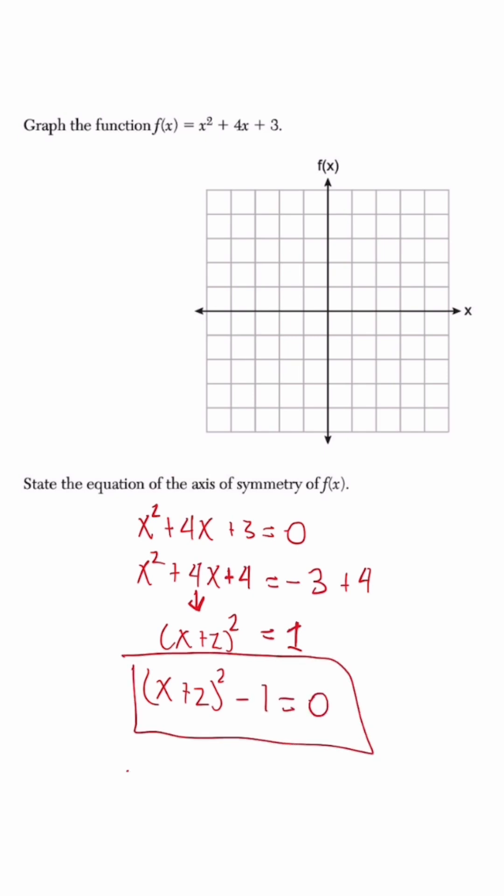So now that it's in vertex form, the vertex would be negative 2, negative 1.